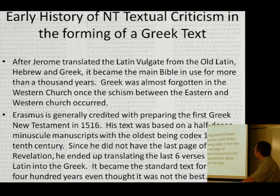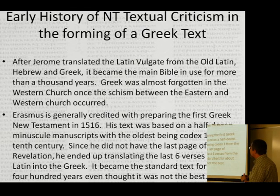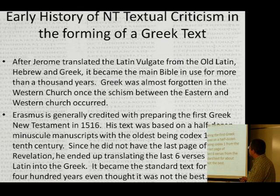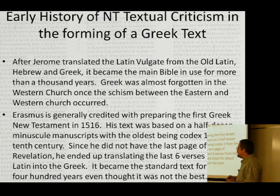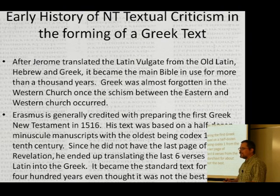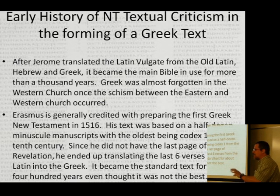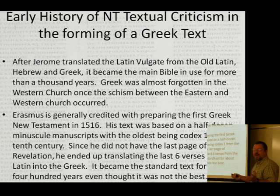A brief history of textual criticism: Jerome translated the Latin Vulgate from the Old Latin, Hebrew, and Greek, and it became the main Bible in use for more than a thousand years. Greek was almost forgotten in the Western Church after the schism between Eastern and Western churches. We're celebrating the 400th year of the King James Bible this year — produced in 1611 — but it hasn't come close to the Latin Vulgate's thousand-year run. Not many people could read the Latin Bible; even priests had limited knowledge of it.